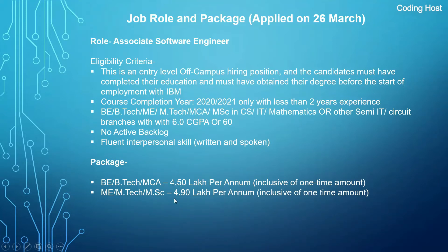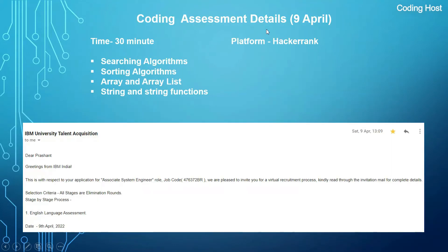The package for B.E./B.Tech and MCA was 4.5 LPA, and for M.E., M.Tech, and M.Sc it is 4.9 LPA. I applied for this role on 26 March 2022. On 9th April I had my coding assessment — the time was 30 minutes and the platform they used was HackerRank. You only have to write a single program.